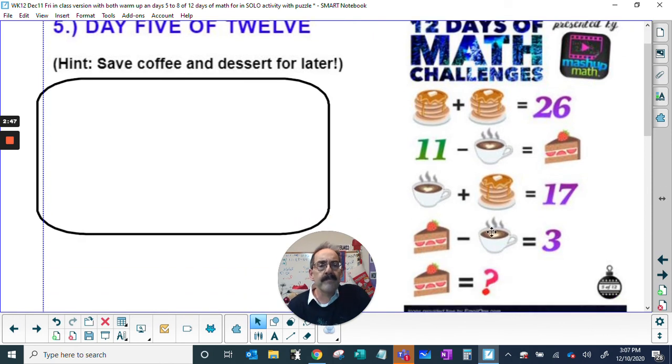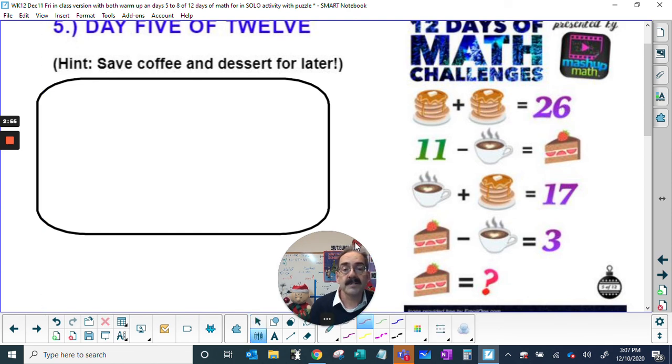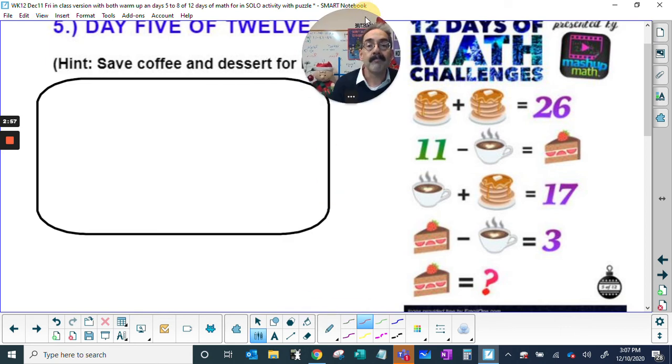So now as we look at this, pancakes and pancakes is twenty-six. Well, if there's two sets of pancakes is twenty-six, my head is in the way the whole time. That's thirteen plus thirteen. So pancakes are thirteen.